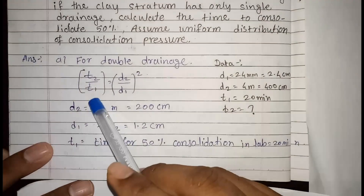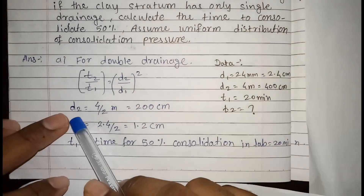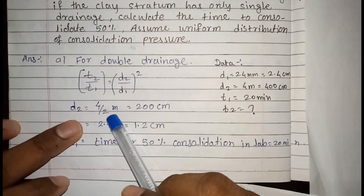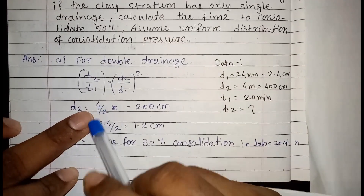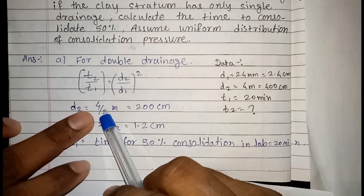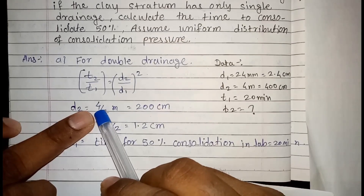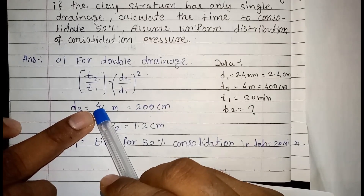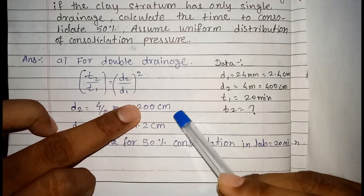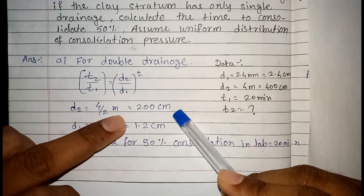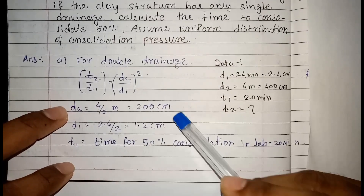The formula used is: T2 / T1 = (D2 / D1)². For the double drainage case, D2 equals 4 meters divided by 2, which is 2 meters. The thickness of 4 meters is converted to 400 cm, and divided by 2 gives 200 cm. We divide by 2 because the field drainage condition is double drainage.